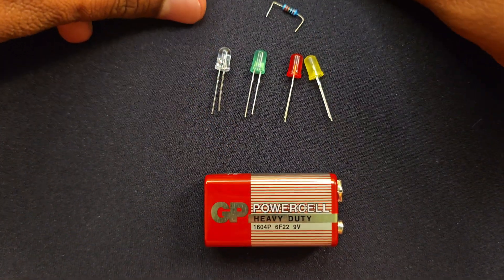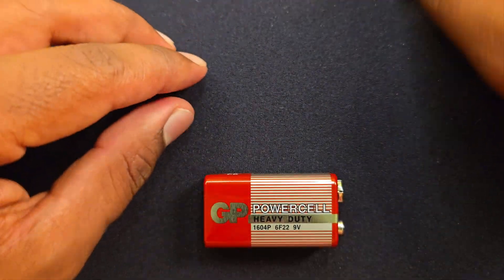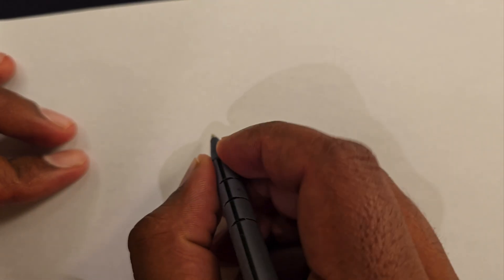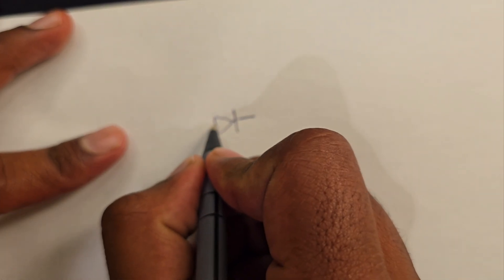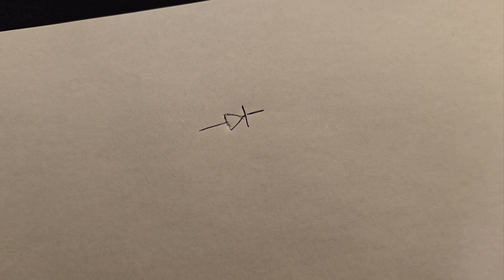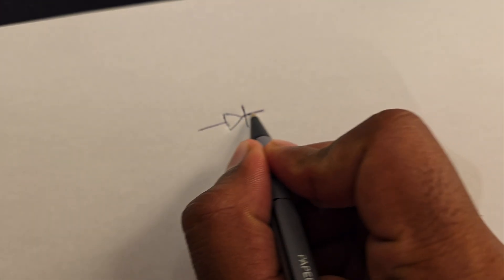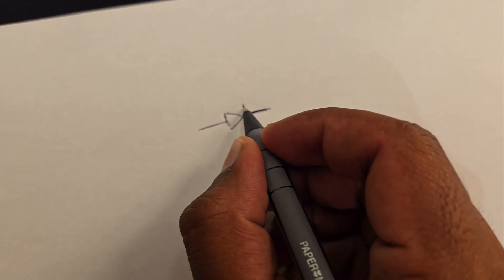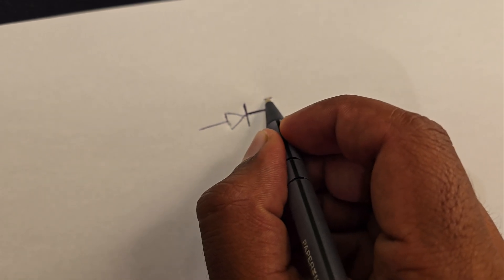Before we connect it, I just want to draw a little diagram and show you how we draw an LED in a circuit diagram. So this is the symbol for an LED — this is what electronics engineers or those working with electronics use in diagrams. This little line here is the negative terminal and this is the positive terminal.